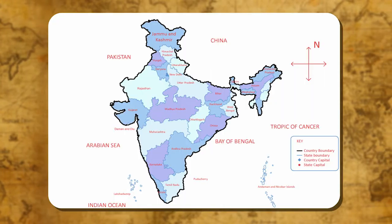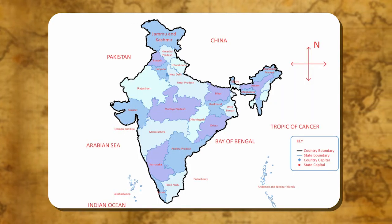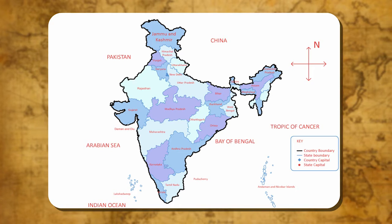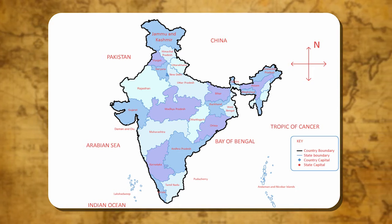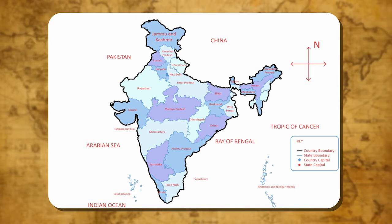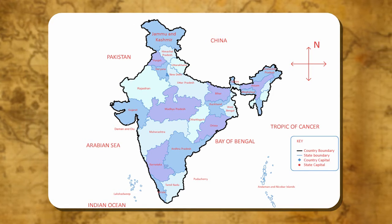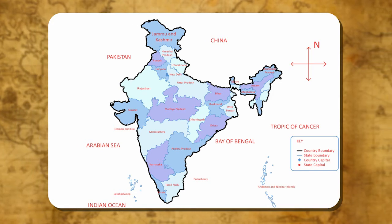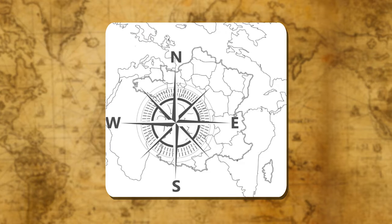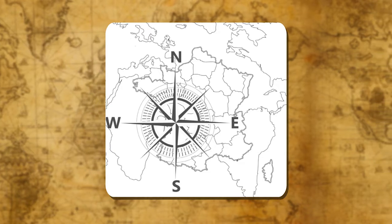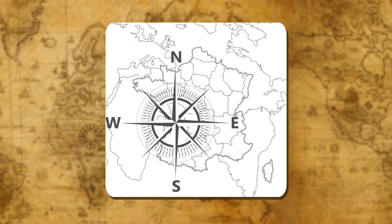Directions. Direction is another very important part of a map. In any map, near the top towards the right, one can see an arrow with the letter N. It is pointing towards north. This is called the north line. When you know the north, you can find out other directions — east, west and south.